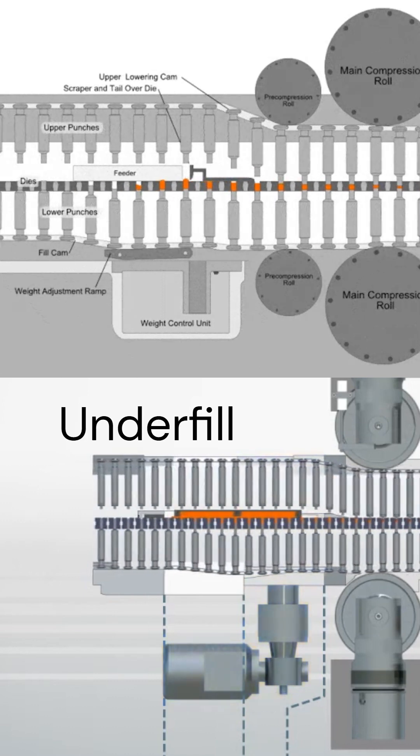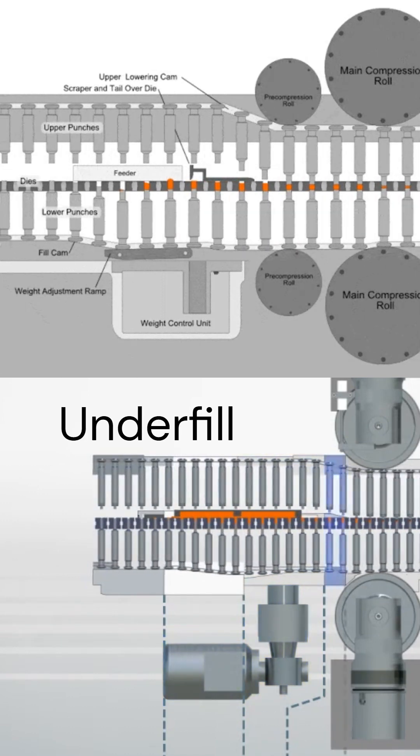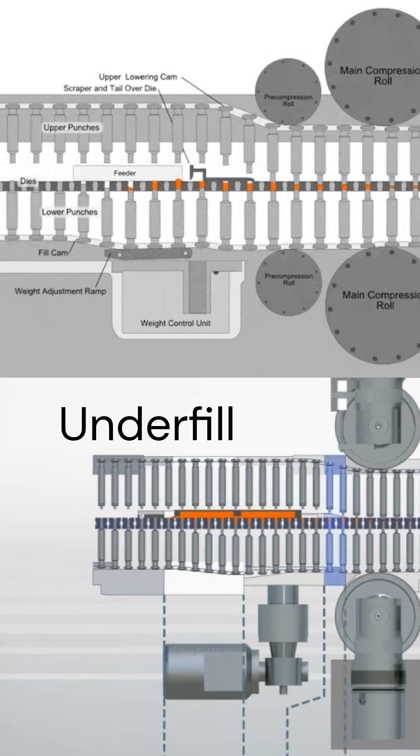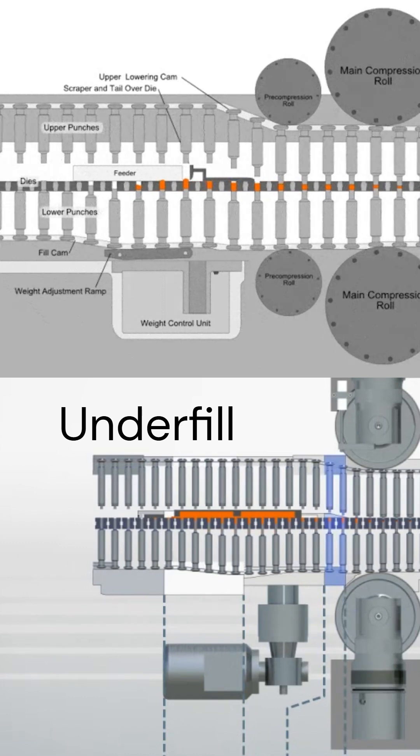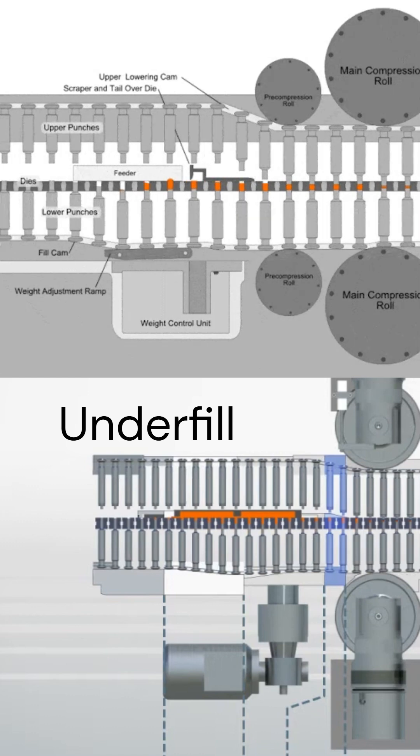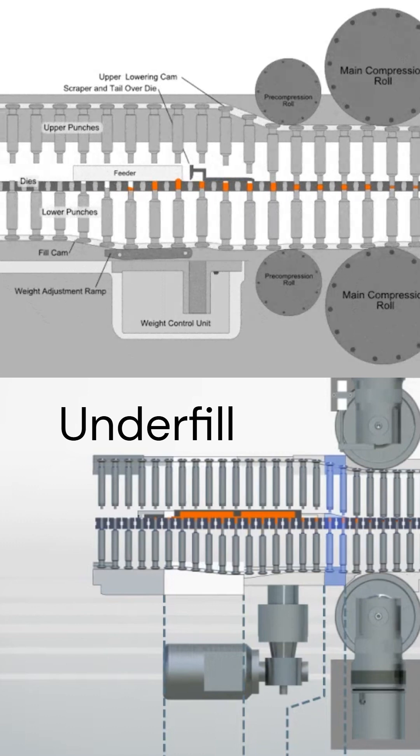At the underfill position, the lower punch is pulled down a few millimeters to avoid powder splashing out of the die when the upper punch closes it off, as powder loss would influence tablet weight.